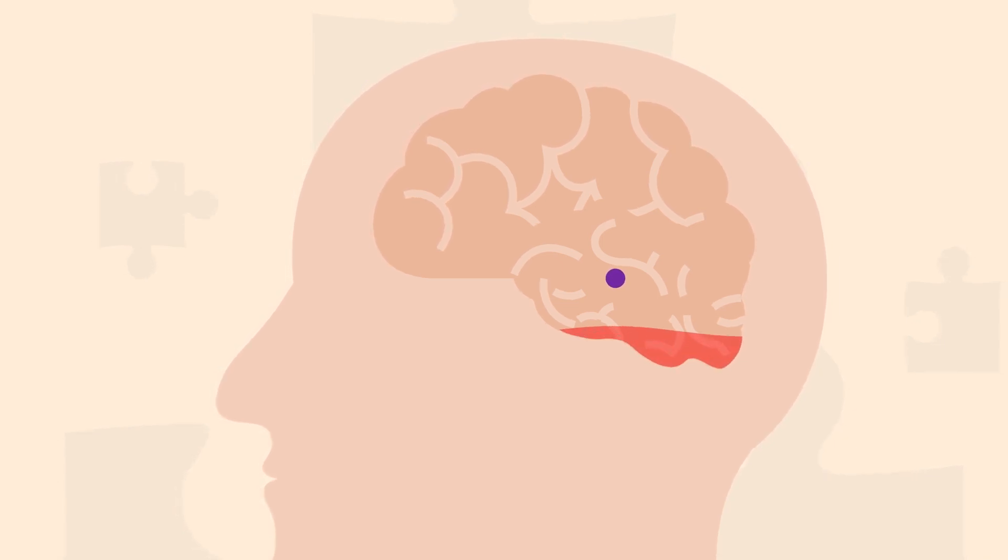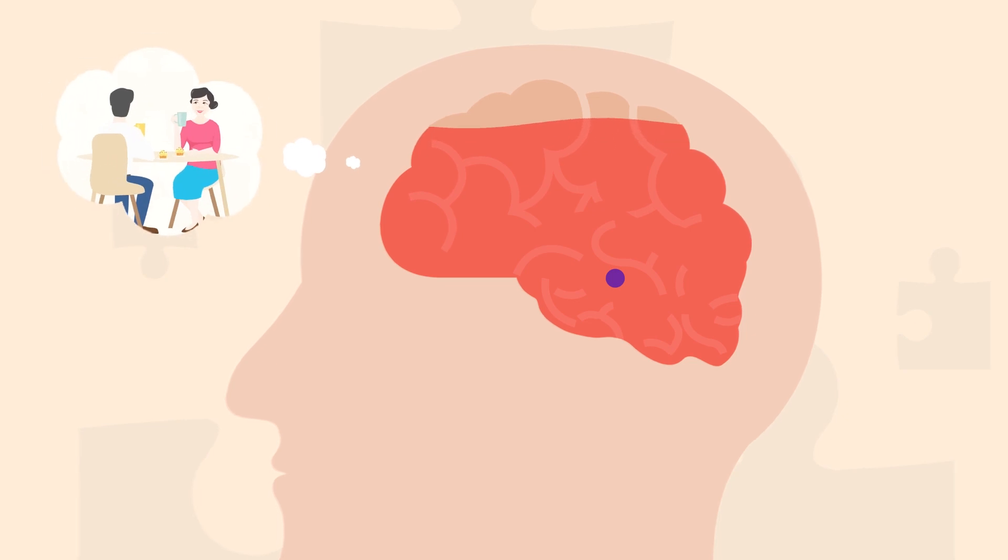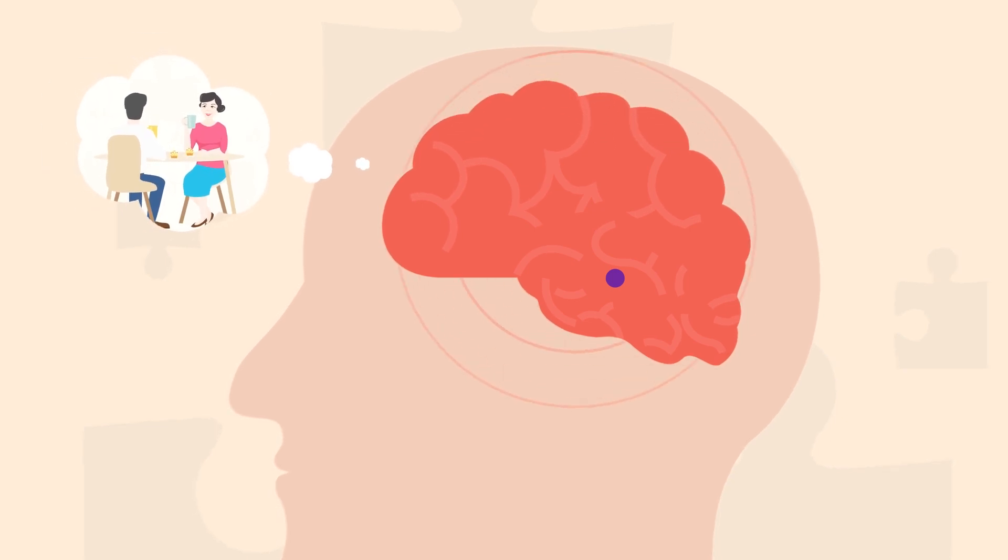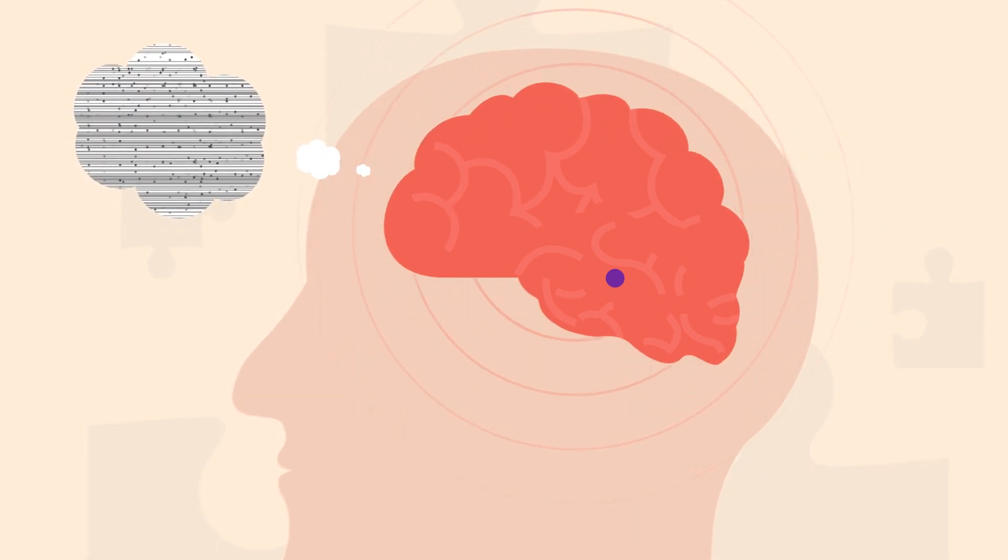The amygdala causes a release of cortisol, a stress hormone. Cortisol harms the electrical signals in your hippocampus, causing them to deteriorate. And remember, the hippocampus is where your memories reside.